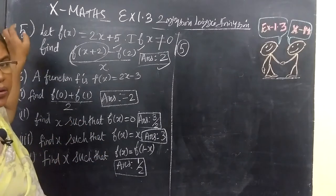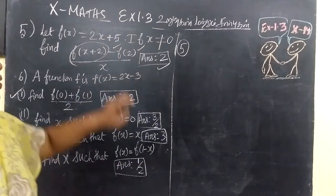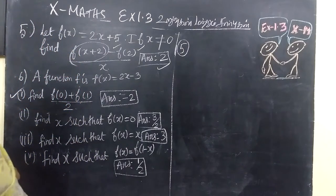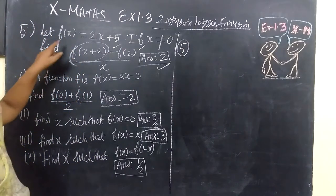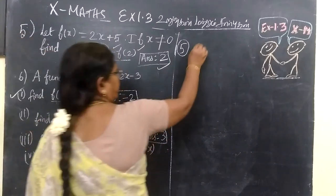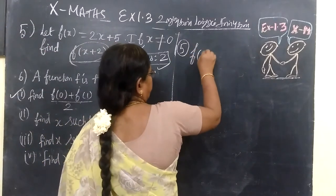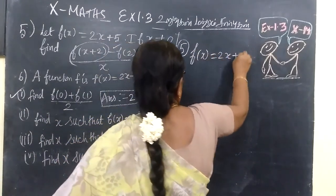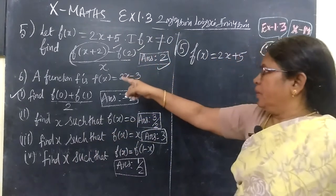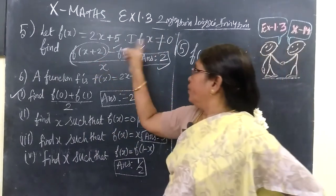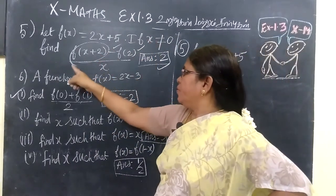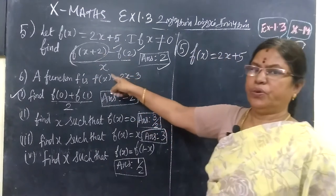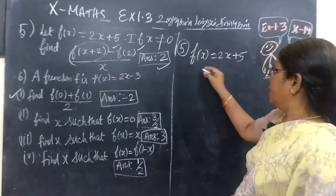We will see question number 5, exercise 1.3, 10th standard. f of x is given as 2x plus 5. If x is not equal to 0, find f of x plus 2 minus f of 2, divided by x.